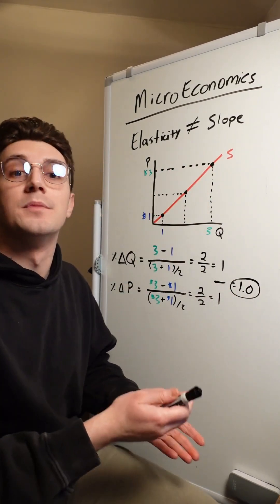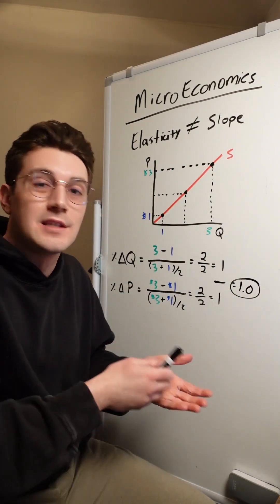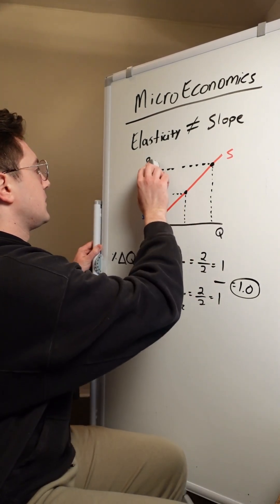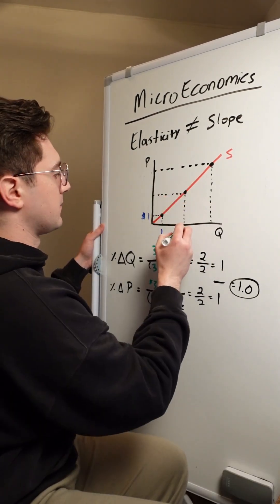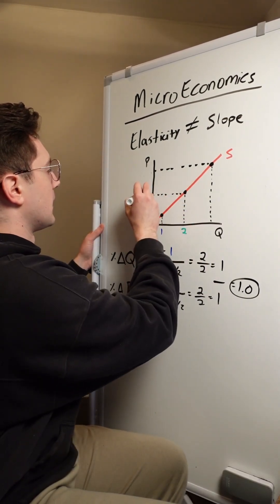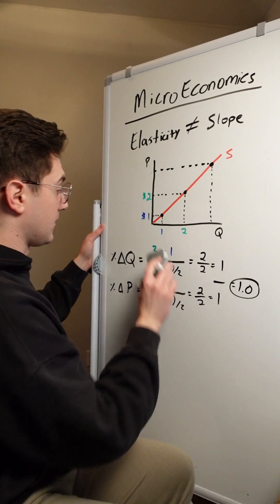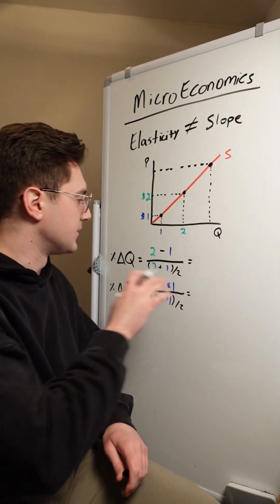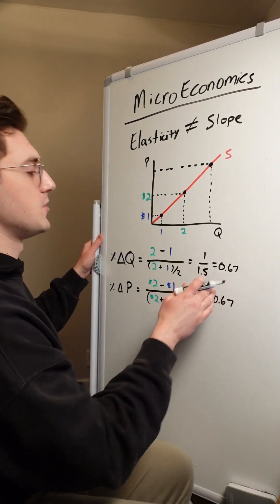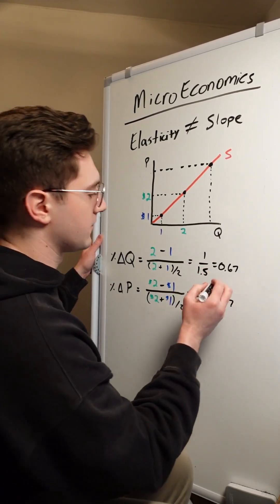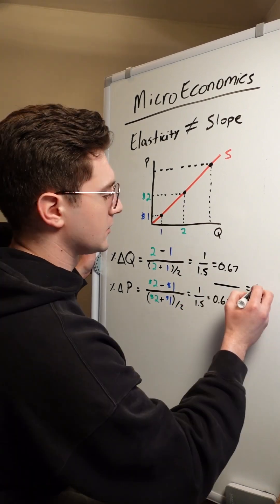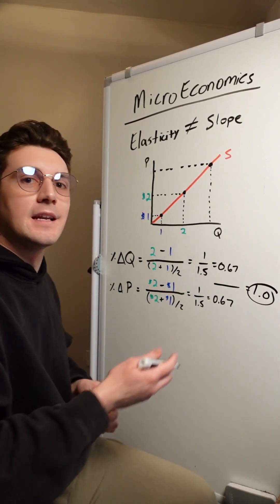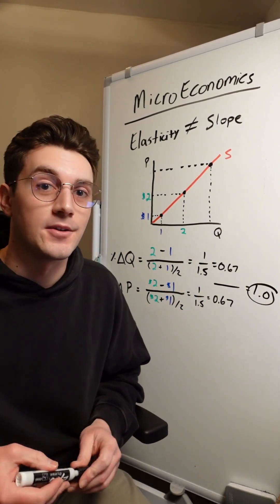Let's test this again by moving between different points to see if the result remains the same. Instead of using the previous P2, we'll use this new point here. I'll update our green values and plug them into the formula. Solving out, I get this value for the numerator and this value for the denominator, and dividing gives us 1.0 again as our price elasticity of supply.